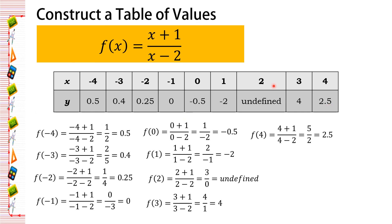This is the table of values for f of x equals x plus 1 all over x minus 2. We can extend the values further — going left to negative 5, negative 6, negative 7, and so on, or right to positive 5, 6, 7, 8, and so forth.